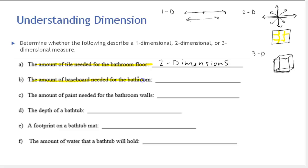Next: the amount of baseboard needed for the bathroom. Baseboard goes around the room — let's draw a bathroom. The baseboard would run around the perimeter, and maybe there's a door where you wouldn't need it, but it runs all the way around. Notice I drew that as a line, so this is a one-dimensional measure. You'd measure it in feet, not square yards. Even though baseboard has some height and width, what you're looking for is that one-dimensional line around your bathroom.